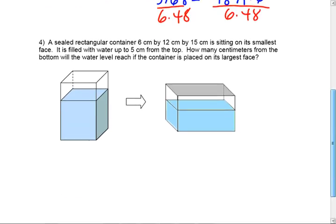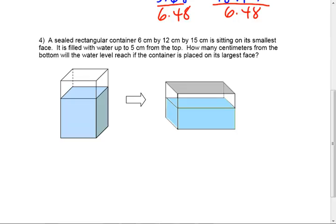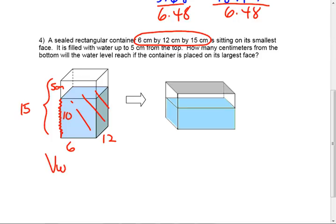How about number 4? Do you have questions on 4? Okay let's do 4. It says I have a container that is sitting on its smallest face. What are the dimensions then of the smallest face? This is 6 and this is 12, and this height is 15. But I don't want that, I want the water. The water is 5 centimeters from the top. So how big is this length? How big is that height of the water? That's 10. Okay, so what's the volume of my water? Okay TJ, the volume of the water is base times height times the height of the prism. So it's 6 times 12 times 10. That's 720.